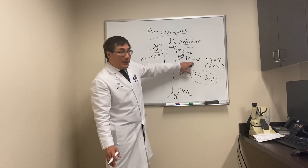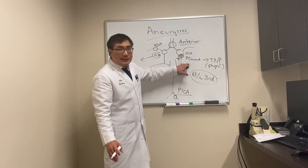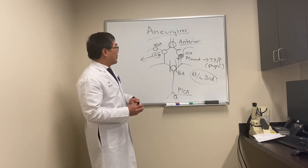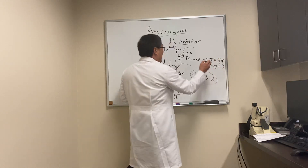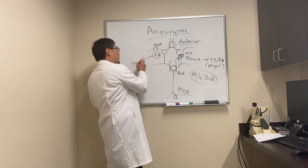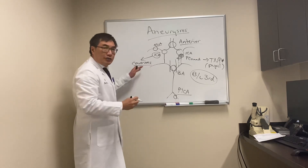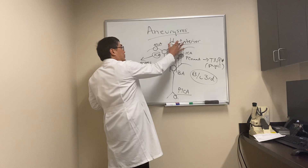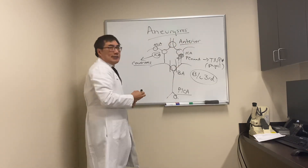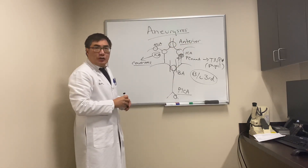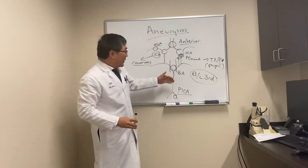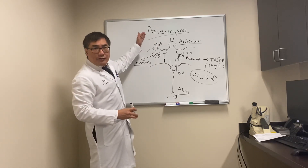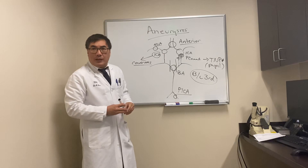The major aneurysm to be worried about is the PCOM aneurysm at the ICA/PCOM junction, which produces a pupil-involved, painful third nerve palsy. The giant intracavernous ICA aneurysm produces ophthalmoplegia. The anterior circulation aneurysms — ACA, ACOM, and ICA — produce optic neuropathies or chiasmopathies. The basilar tip aneurysm causes bilateral third nerve palsies. Ophthalmologists need to know the most common aneurysm locations and their presenting neuro-ophthalmic findings.